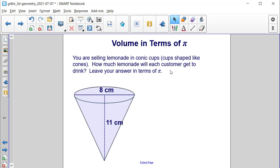Let's try an example. You're selling lemonade in conic cups, or cups shaped like a cone. How much lemonade will each customer get to drink if it's filled? Leave your answer in terms of pi.